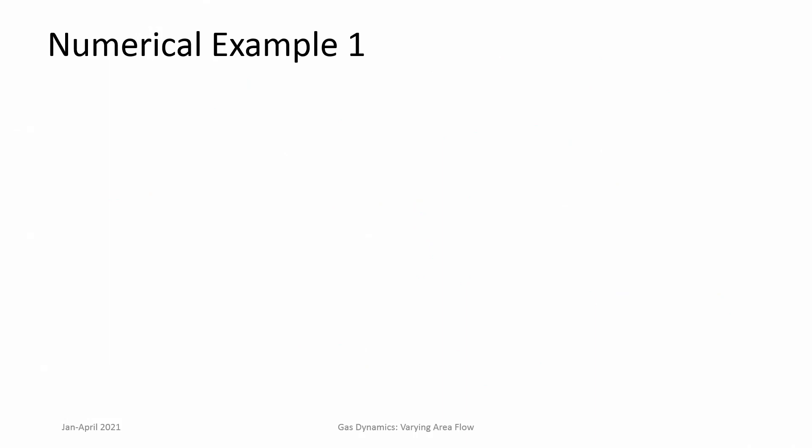Next we look at another example: an in-draft supersonic wind tunnel to be constructed. In-draft means air is taken from ambient atmosphere and pulled into a vacuum tank through a convergent-divergent nozzle. A test run is started with a pressure of 0 kilo Pascal in the tank — meaning vacuum levels are very high. The question is: how long can uniform flow conditions be maintained in the test section?